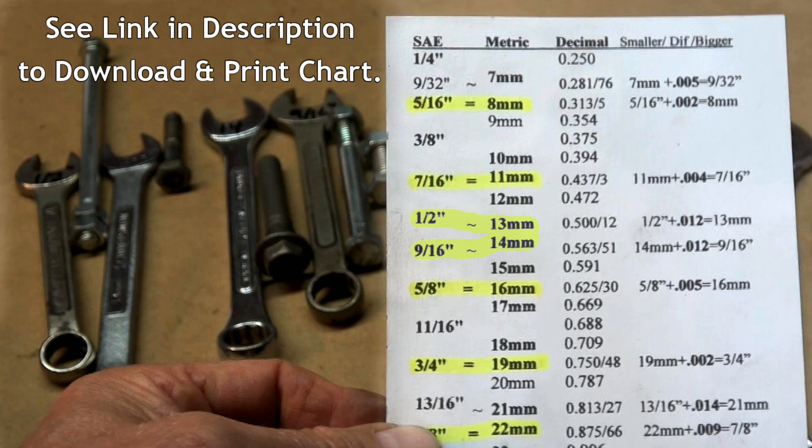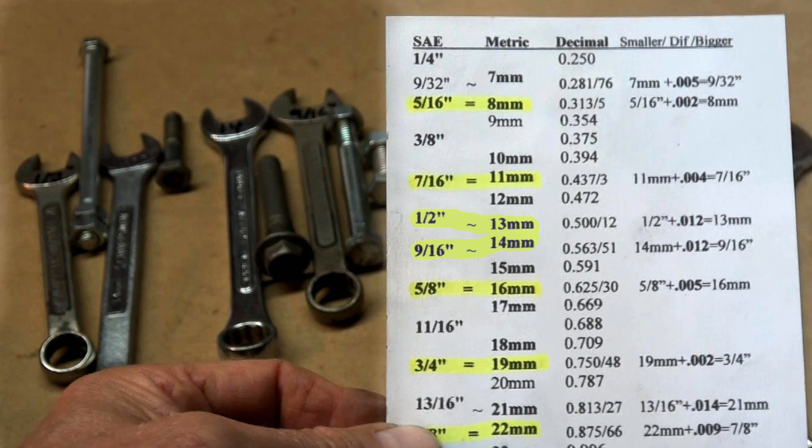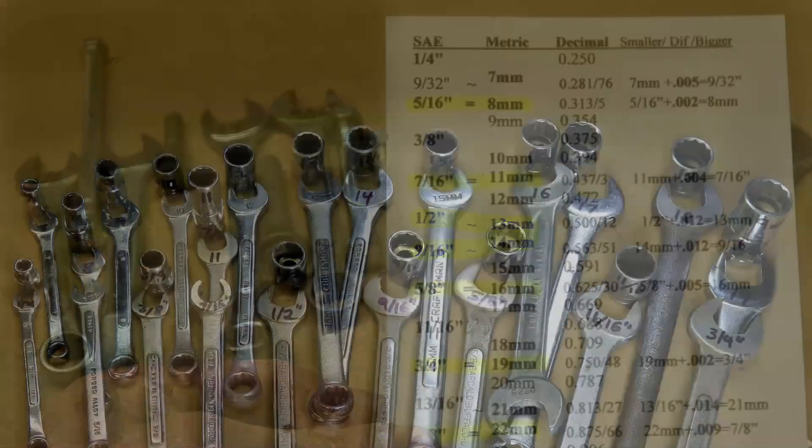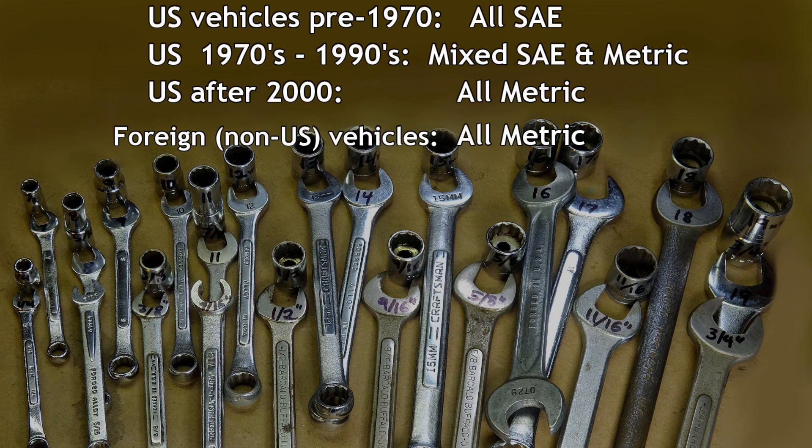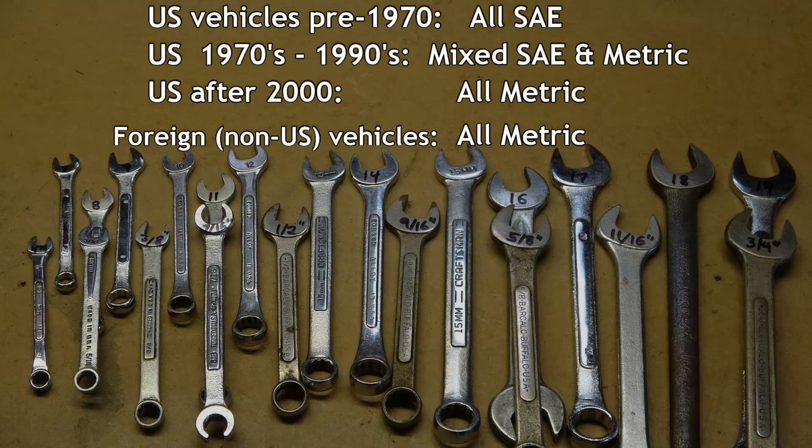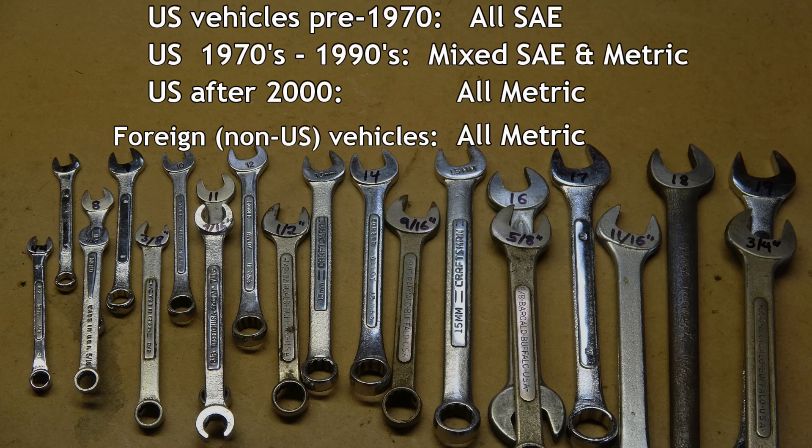This chart converts both standard and metric to thousandths of an inch so they can be directly compared. You may run into a mix of metric and standard bolts on the same vehicle, especially on US cars and trucks from the 1970s and 80s.